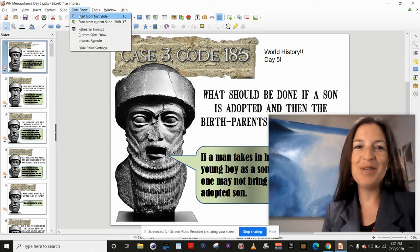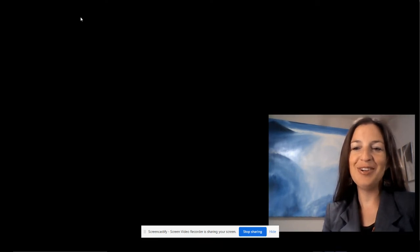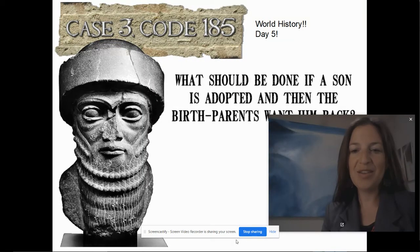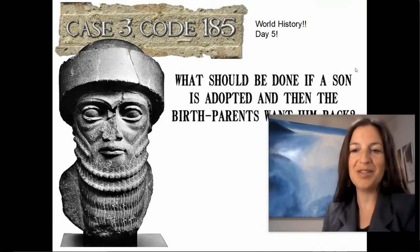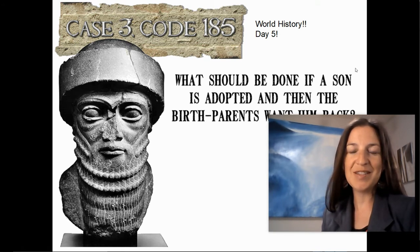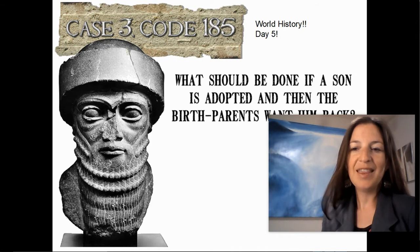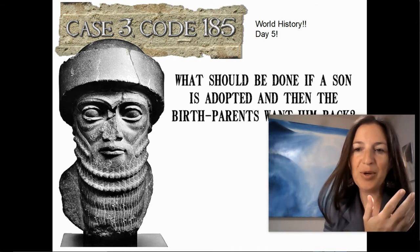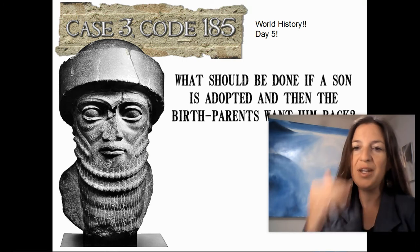Hello, welcome to World History Day Five. We are going to continue investigating the Codes of Hammurabi and seeing what decisions we would make, then comparing those to Hammurabi's written decisions in ancient history. In your notebook, please write down the case number — this would be three dash, the code number which is 185 for each one.